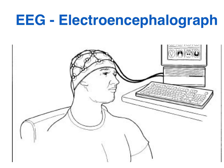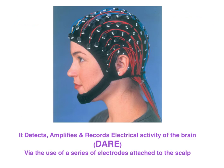The EEG, the electroencephalogram, uses a series of electrodes attached to the scalp to detect, amplify, and record the electrical activity of the brain.